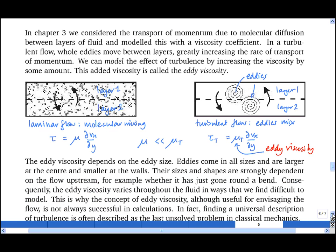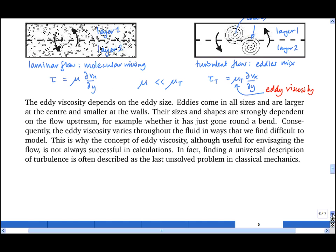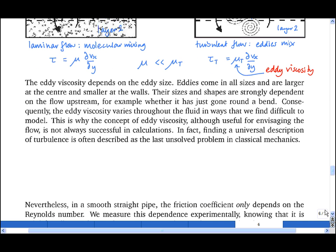The eddy viscosity is a very useful concept, but it varies throughout a fluid in ways that are very difficult to predict. It also takes no account of the fact that the apparent eddy viscosity can vary with direction in space, as well as position in space. So it's not always very successful in calculations. In fact, finding a universal description of turbulence is often described as the last unsolved problem in classical mechanics, and there's a very good reason why it's unsolved.